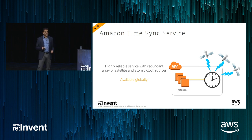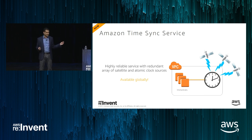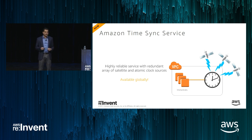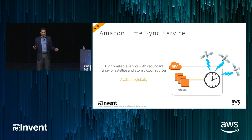Just yesterday, we introduced Amazon TimeSync Service — especially useful for distributed systems where instances need a shared understanding of what time it is. We've built a highly reliable service with satellite-connected atomic clocks in every region, immediately accessible to any instance within your VPC, free of charge. Delivered over NTP, it's available now and we encourage everyone to take advantage of it.